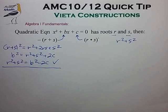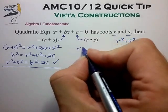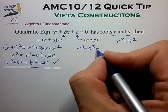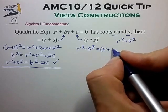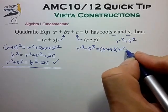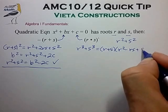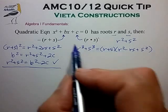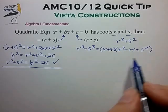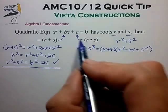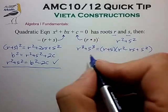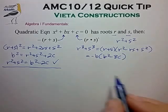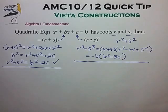Another term that comes up in some of the AMC problems is r cubed plus s cubed. We can evaluate that by factoring into r plus s, times r squared minus rs plus s squared. We can quickly identify r plus s as being minus b, r squared plus s squared from before, and minus rs as just being minus c. This quickly reduces to minus b times b squared minus 3c. Another simple result that's pretty easy to derive.